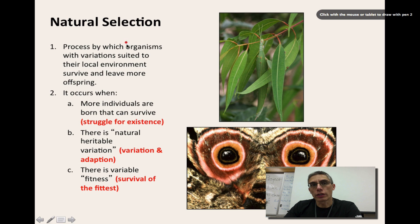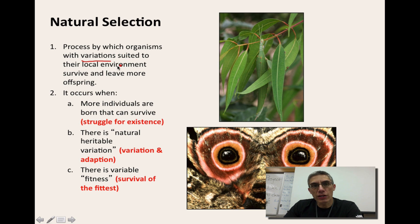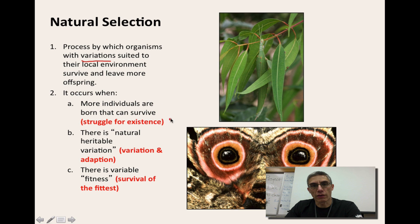In the previous slide, we looked at the conditions under which natural selection occurs. The idea of natural selection is basically that those organisms with certain variations best suited to their environment are going to survive and leave more offspring. It occurs when you have those three conditions: more individuals are born than can actually survive, creating the struggle; there needs to be a natural heritable variation within that population; and there needs to be high fitness, so only the fittest actually survive out of that population.